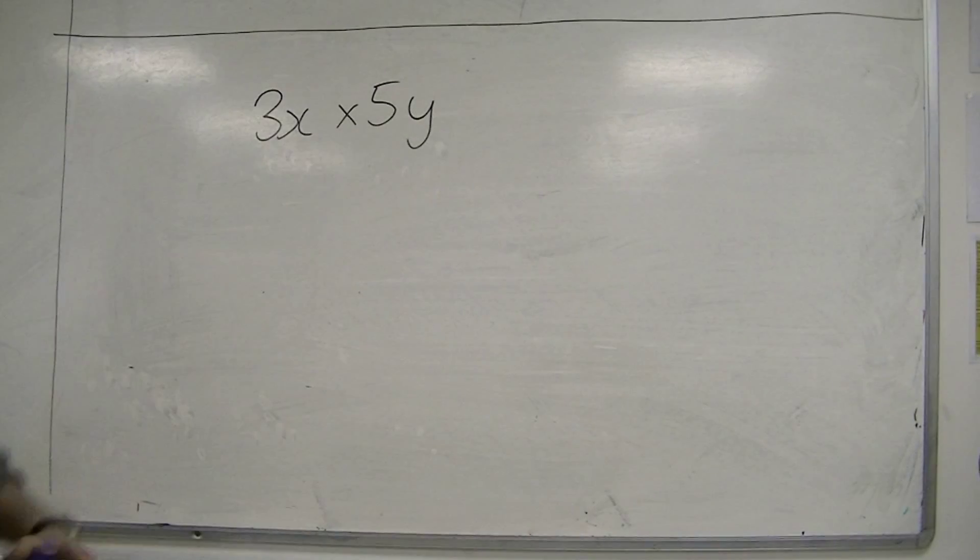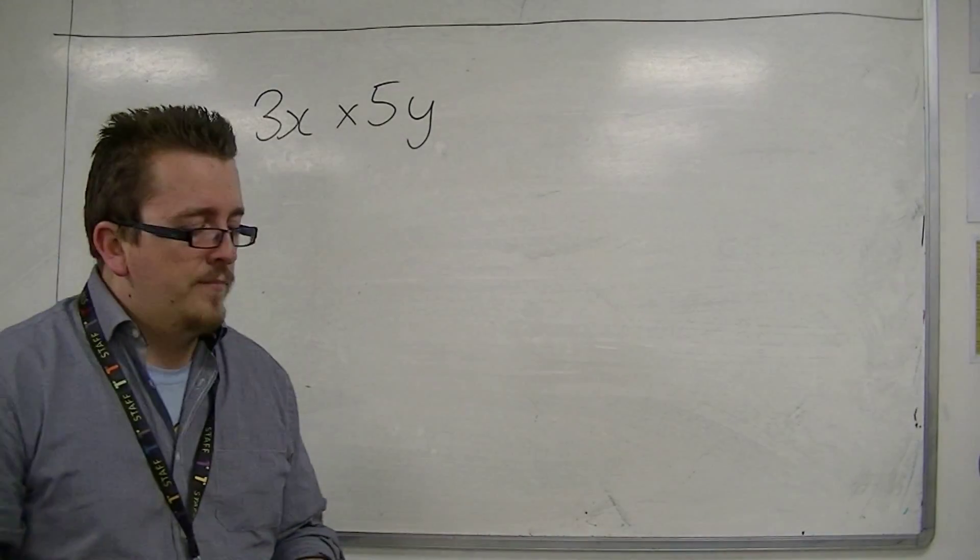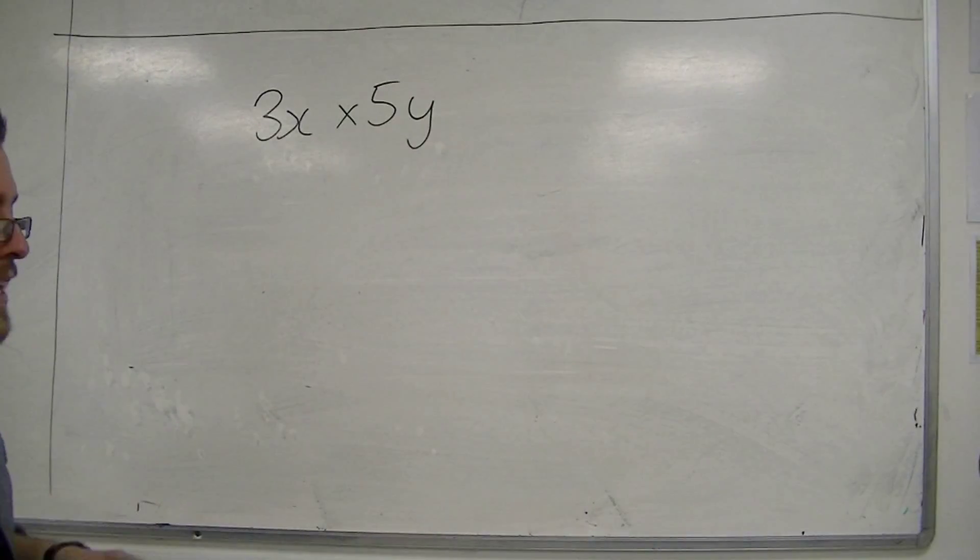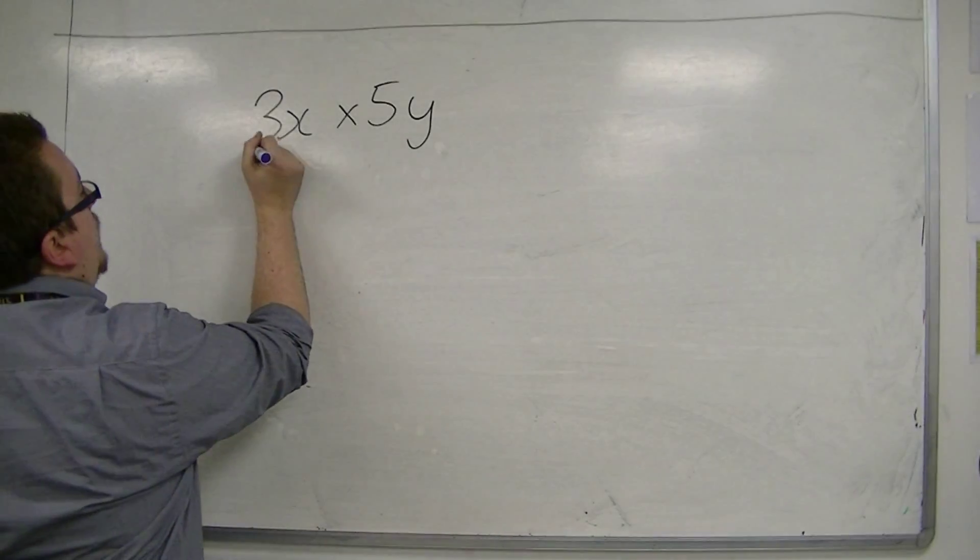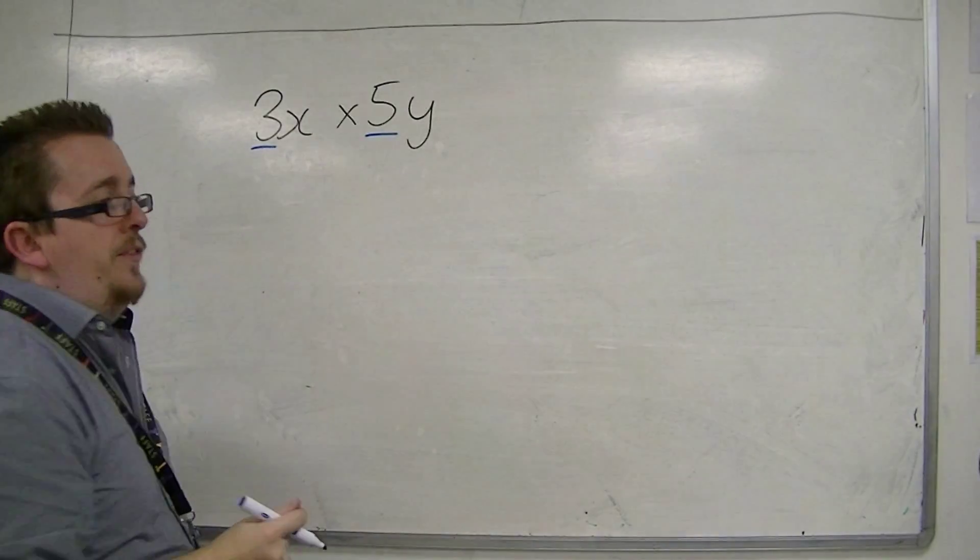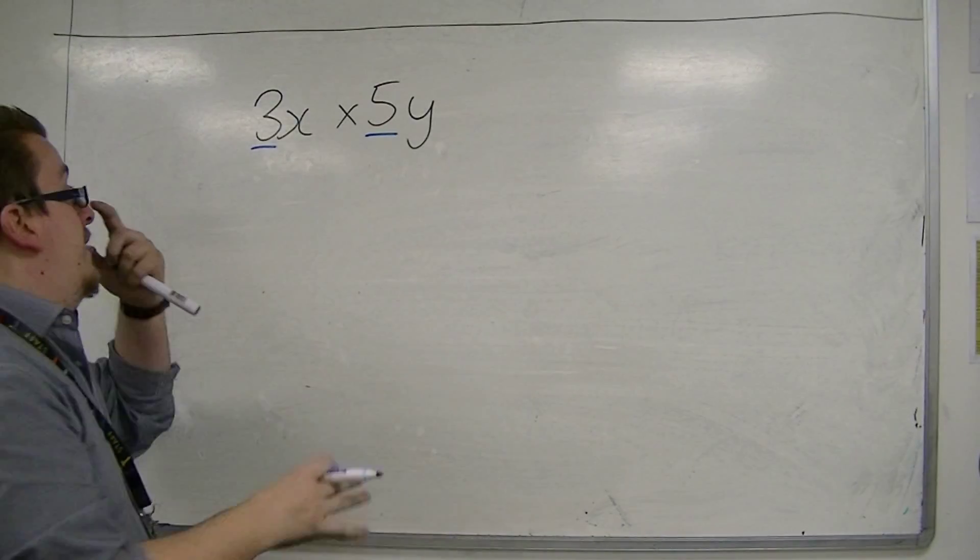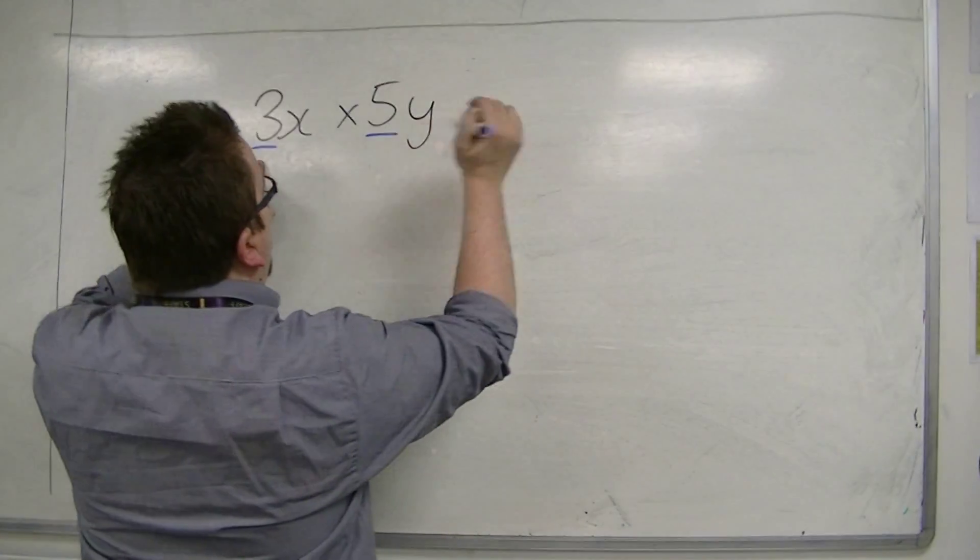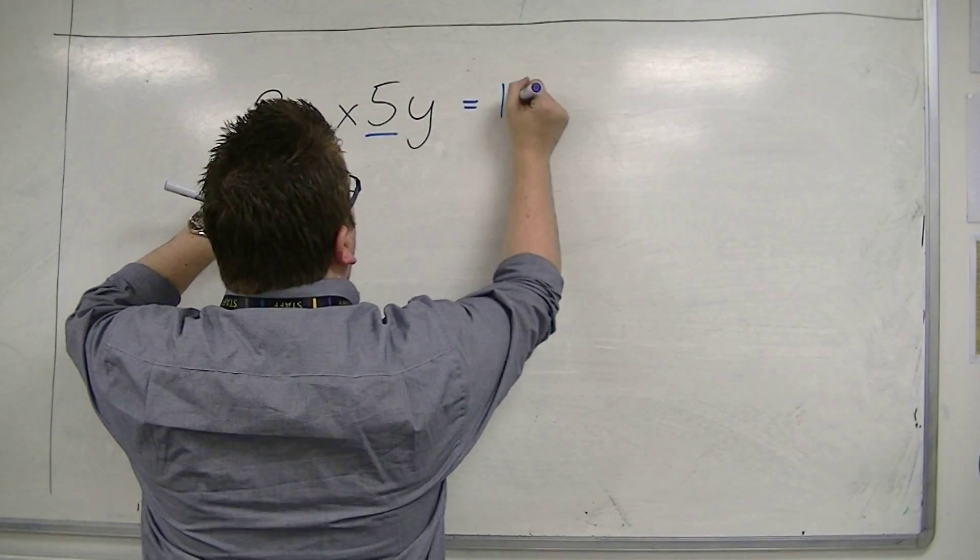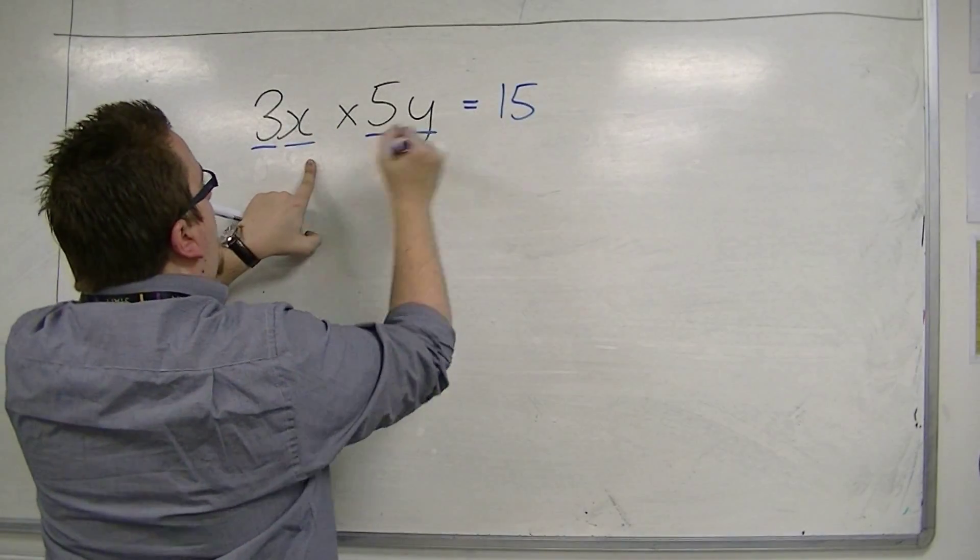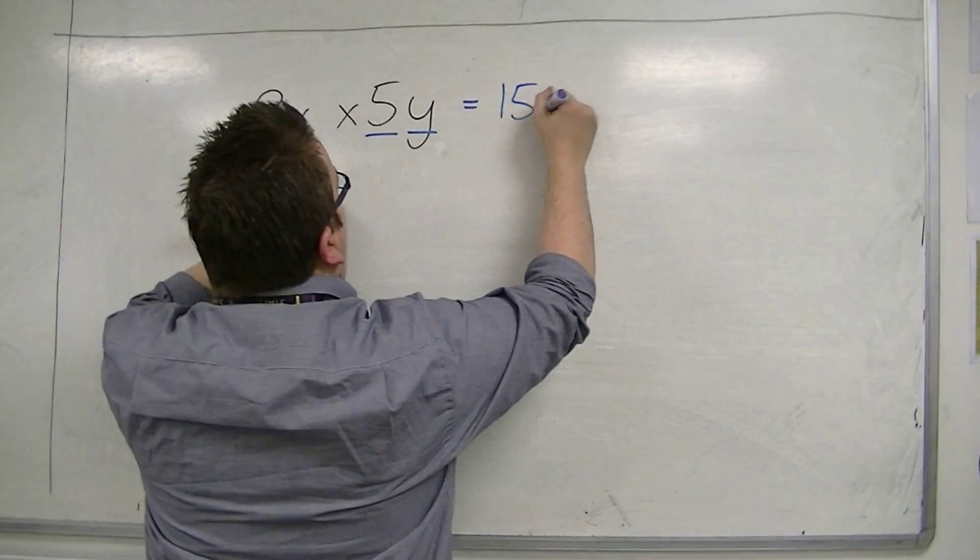If we're dealing with something like this, 3x times 5y, then what you need to remember is to deal with the numbers first. Deal with the numbers first, then we're going to deal with the letters. So we've got 3 times 5 is 15. And then we have the letters x times y is xy.